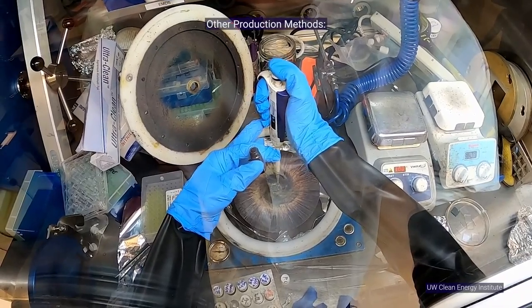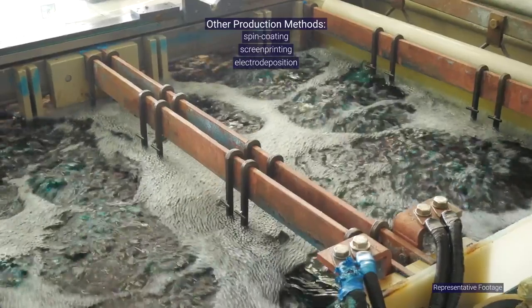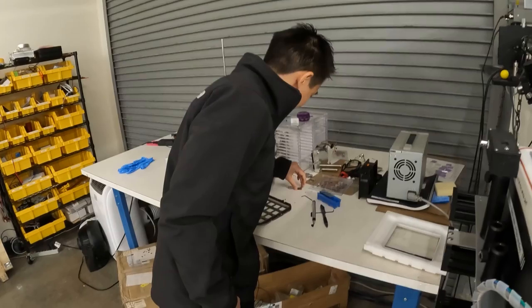You can also make perovskite cells with spin coating, screen printing, electrode deposition, or even printing the material on a sheet just like an inkjet printer. Here's the end result. A small rectangular perovskite solar cell.